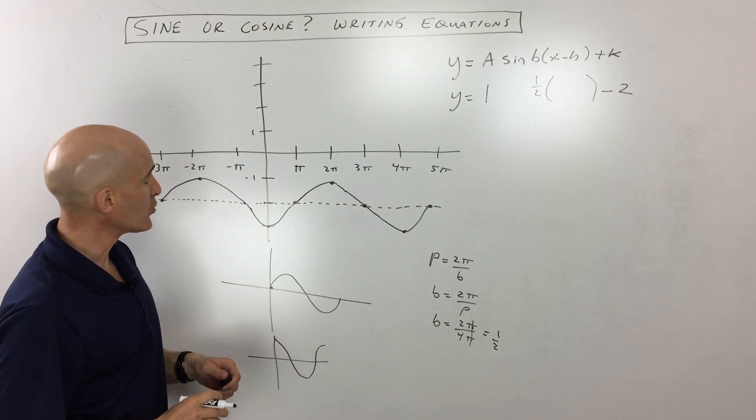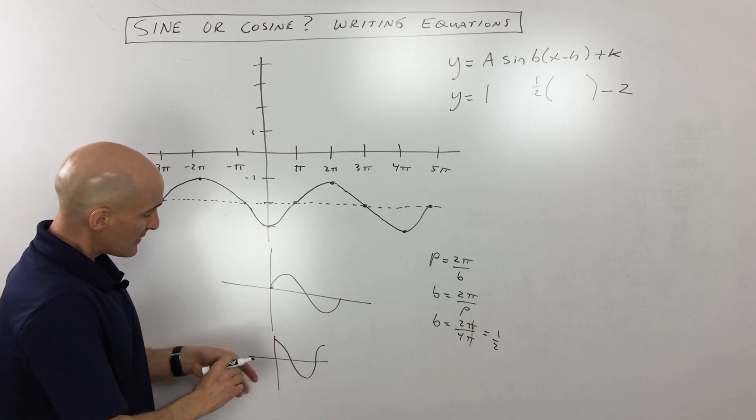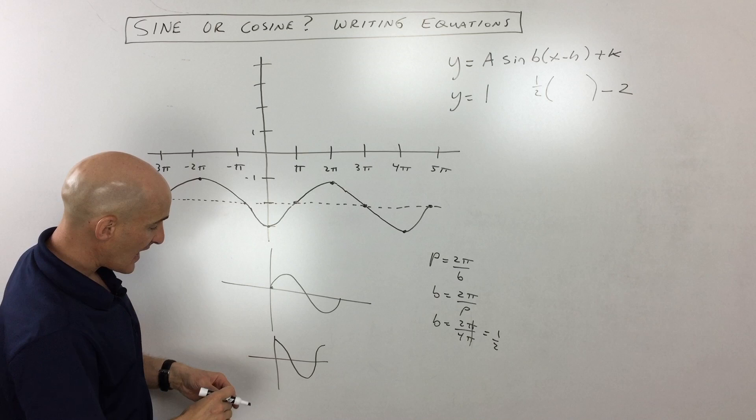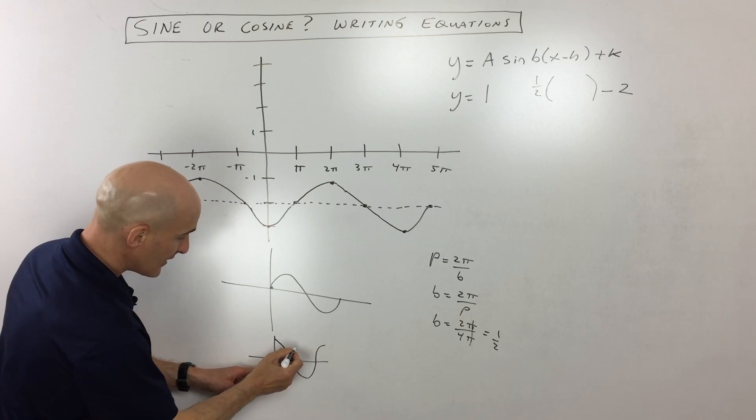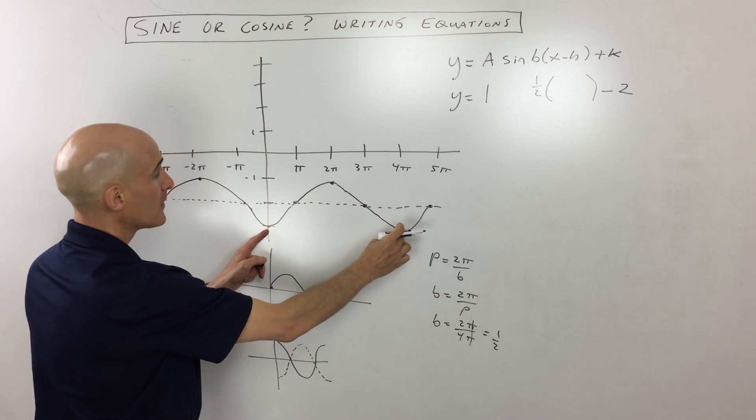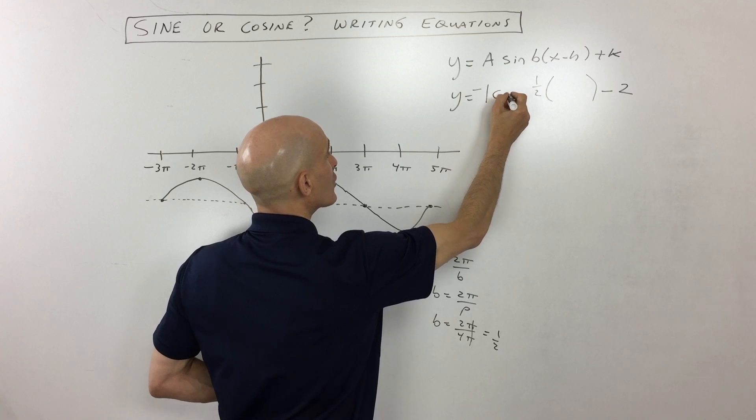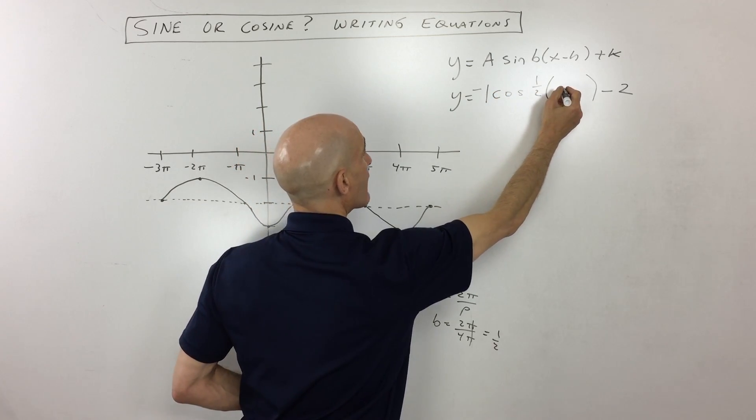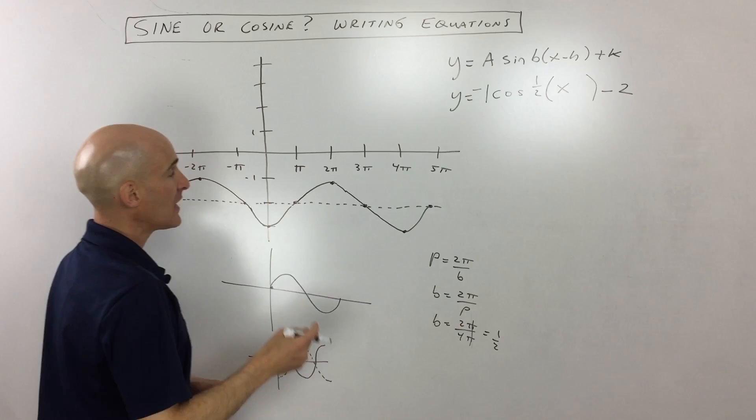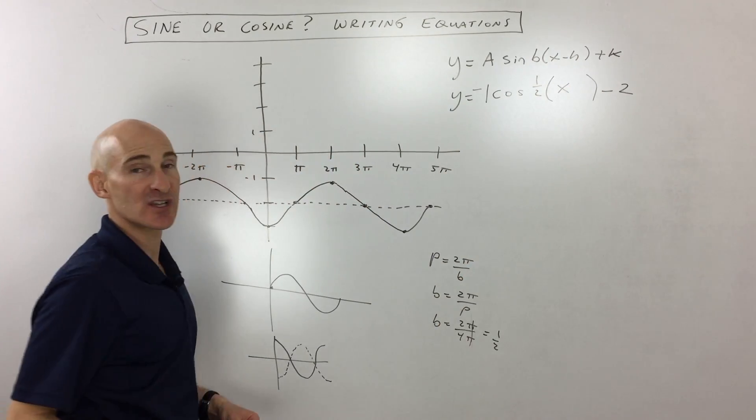Let's maybe start with a cosine graph. Now you see this cosine graph down here. If I was to reflect it over the x-axis, then it would be over here, and it would look something like this dotted line that I'm drawing right now, which looks a lot like the graph that we have here. So I'm going to make this a negative one cosine one half x. Now it hasn't shifted left or right, so my h value is just going to be zero.